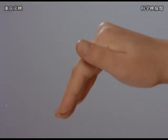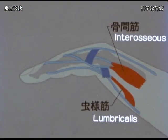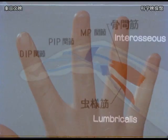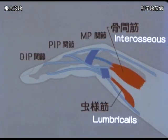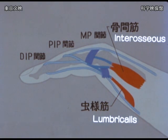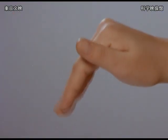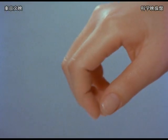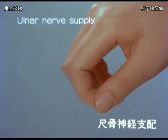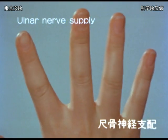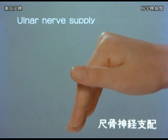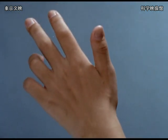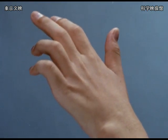Flexion of the MP joints is done by the interossei and lumbrical muscles. The interossei muscles perform quite a unique movement. A portion of the interossei fibers attach to the proximal phalanx and act to abduct and adduct the finger. The remaining portion of fibers blends into the lateral band with the lumbrical muscle and flexes the MP joint, with the force further transmitted dorsally to extend the PIP and DIP joints. All the interossei muscles and the lumbricals to the ring and little fingers are innervated by the ulnar nerve. A textbook would say that ulnar nerve paralysis results in claw-hand deformity, but actually only the ring and little fingers go into this deformity.